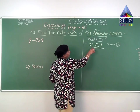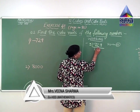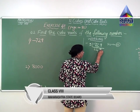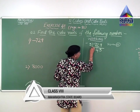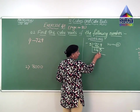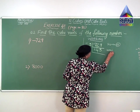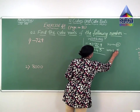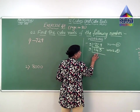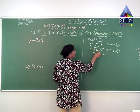For the divisibility test for 3, we find the sum of the digits. If the sum is divisible by 3, the whole number is divisible by 3. So 7 plus 2 gives 9, and 9 plus 9 gives 18. Since 18 is divisible by 3, the number 729 is also divisible by 3. Dividing: 3 twos are 6, remainder 1 carries over, making 12. Then 3 fours are 12, and 3 threes are 9.